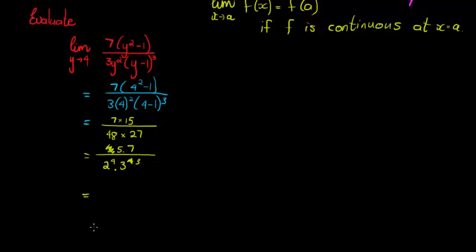And this is as simple as I can write it: 5 times 7 is 35 over 16 times 27. What is 16 times 27? Well, 7 times 6 is 42, 7 times 1 is 7 plus 4 is 11 and a 0. I'm doing it the long way around, I haven't done this in ages.